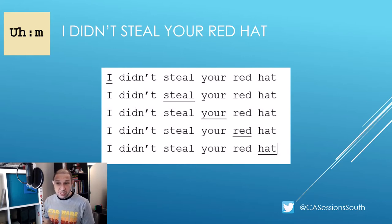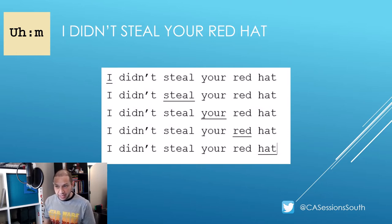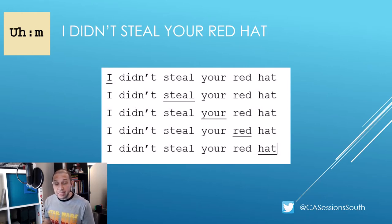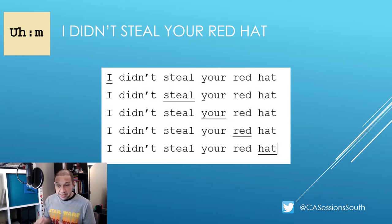This example shows how changes only in emphasis can accomplish different social actions within the same turn at talk. In the first example, the emphasis is on 'I' — 'I didn't steal your red hat' — the available inference is that someone else did. In the second, the emphasis is on 'steal' — you can infer they may have borrowed it or received permission. In the third, the emphasis is on 'your' — they may have stolen someone else's. In the fourth, the emphasis is on 'red' — they may have stolen a different hat. And in the fifth, the emphasis is on 'hat' — a possible inference is that they stole something else that was red.